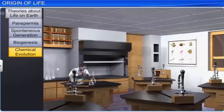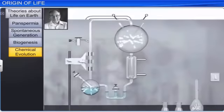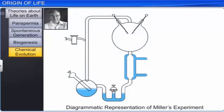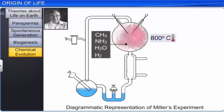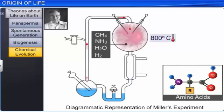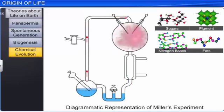In 1953, American scientist Stanley Lloyd Miller recreated these conditions in a laboratory. He created an electric discharge in a closed flask containing methane, ammonia, hydrogen, and water vapor at 800 degrees centigrade, and observed the formation of amino acids. Later on, while conducting similar experiments, other scientists observed the formation of sugars, nitrogen bases, pigment, and fats as well.